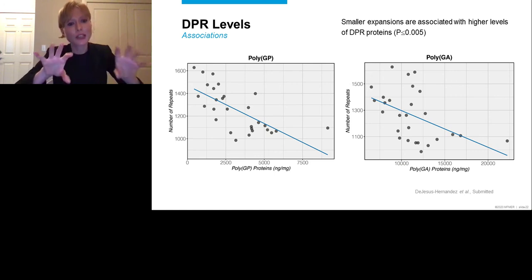We then looked at the dipeptide repeat protein levels, and here, again, we're displaying two correlation plots with the number of repeats, and in this case, the burden of dipeptide repeat proteins, specifically polyGP and polyGA. And a similar inverse correlation is seen as the number of repeats decreases, the burden of dipeptide repeat proteins goes up. And this does make sense as well, because I just told you that if you have a smaller expansion, it's easier to transcribe it. They have higher levels of expansion-containing transcripts. And these expansion-containing transcripts serve as templates for repeat-associated non-ATG translation, RAN translation, therefore causing higher levels of dipeptide repeat proteins as well.